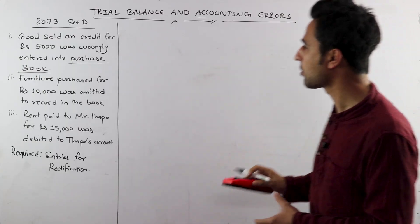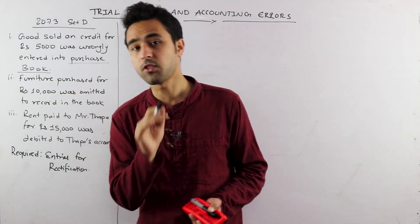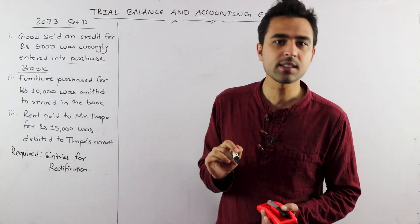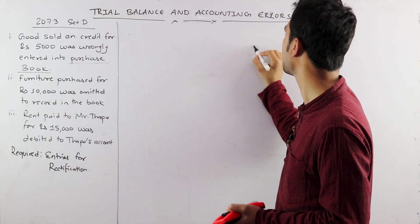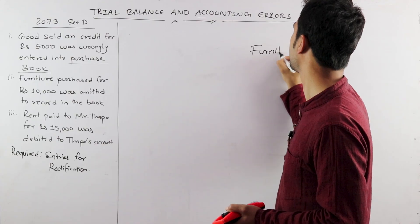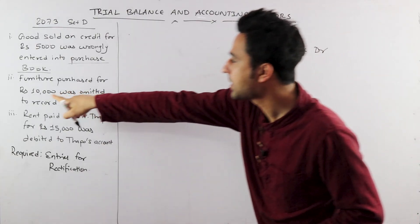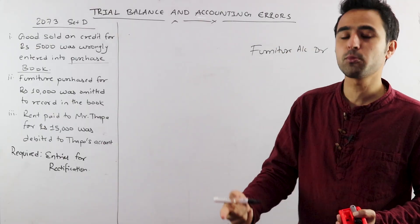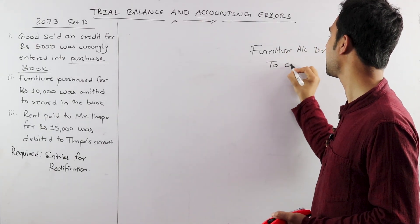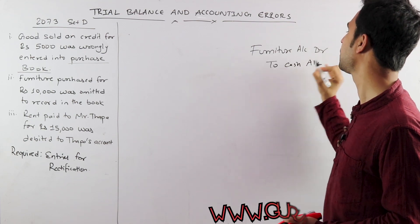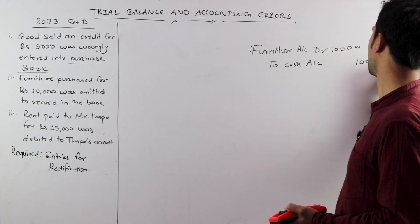Second question: furniture purchased for Rs. 10,000. Furniture is a fixed asset. In the journal entry, the correct entry is: Furniture account debit — to Cash account.